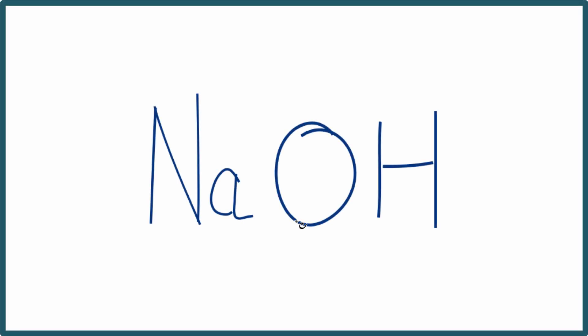Here's how we figure out the number of ions in NaOH, sodium hydroxide. The way to do this is: sodium is a metal, and then we have this group of non-metals here. So it's an ionic compound.